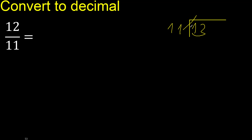11 multiplied by 2 is 22, which is greater. So, 11 multiplied by 1 is 11. 12 minus 11 is 1. Next.